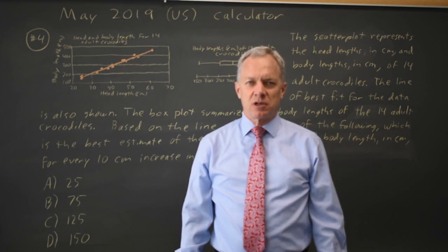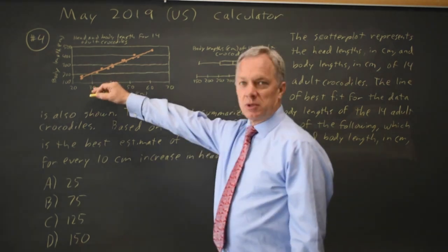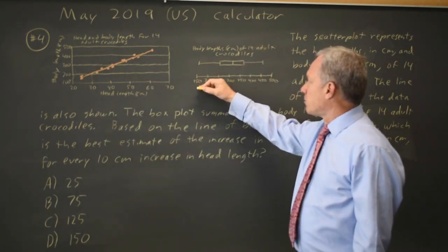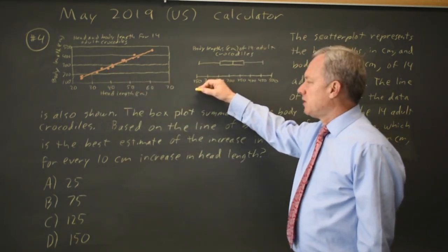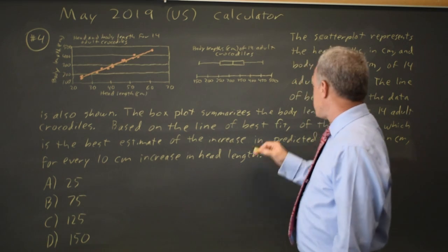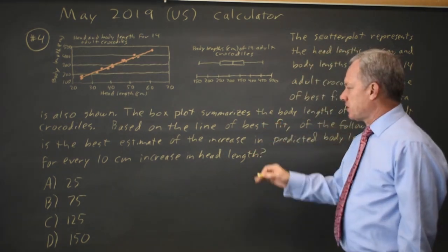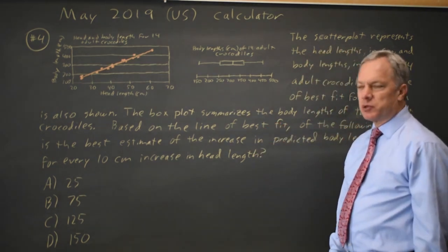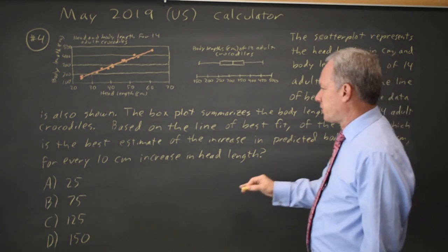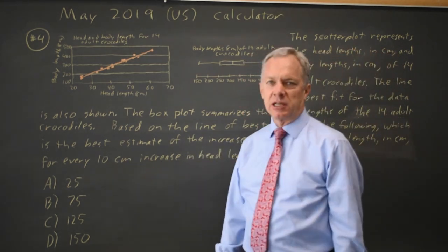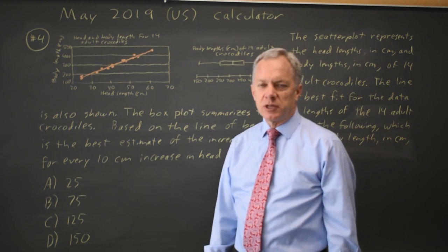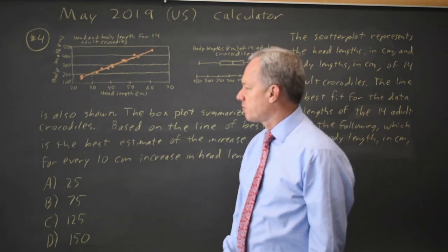This is calculator question number four. College Board gives us a scatter plot with a line of best fit and a box plot for the length of crocodiles and they ask, based on the line of best fit, which is the best estimate of the increase in the predicted body length for these crocodiles for every 10 centimeter increase in head length. So this is related to a question of slope, and they often ask questions that are based on the slope of the line of best fit.